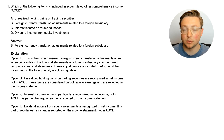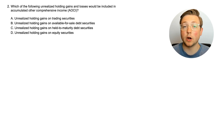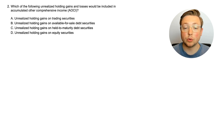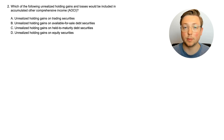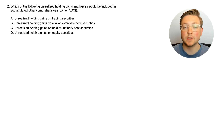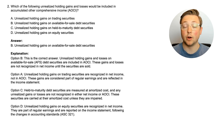Let's go to the next question to learn some more items. Here we are at question two: which of the following unrealized holding gains and losses would be included in accumulated other comprehensive income? The answer is B: unrealized holding gains on available-for-sale debt securities. This is another thing that is counted in other comprehensive income.